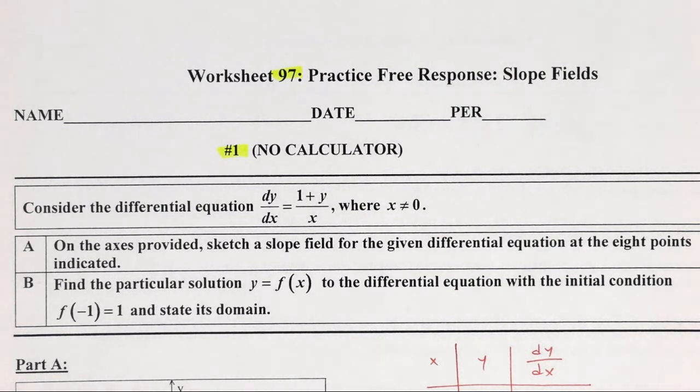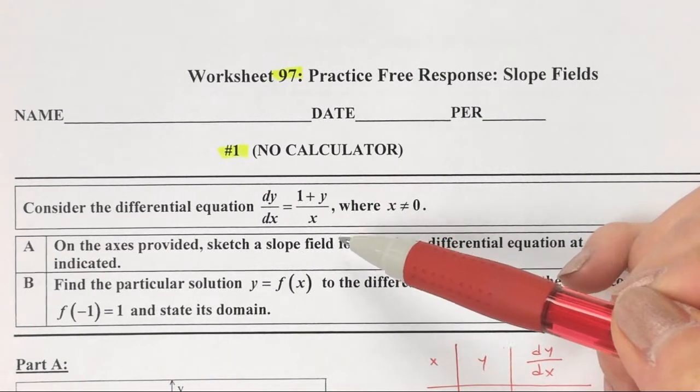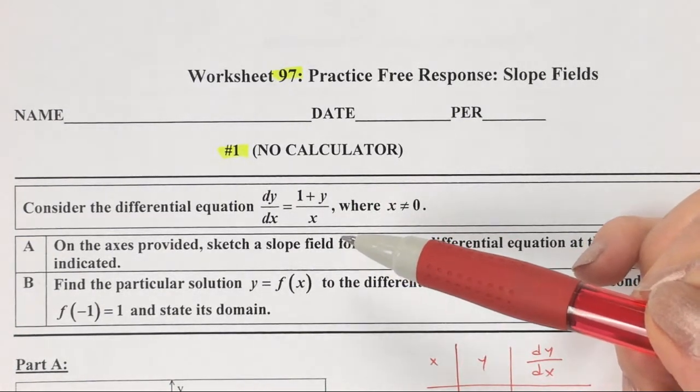Okay, slope fields. So definitely for slope fields, you want to look at section 6.1, I think it is, or 6.2, I don't remember exactly which one, but one of those will remind you how to draw slope fields, and that's going to be part of this kind of question for sure.